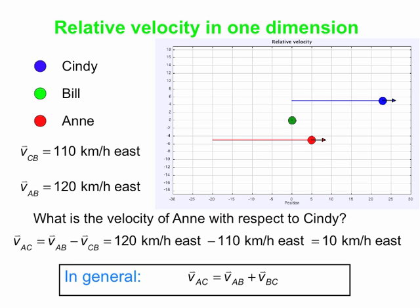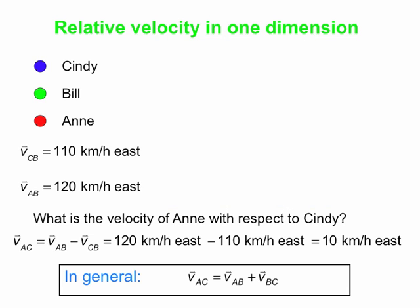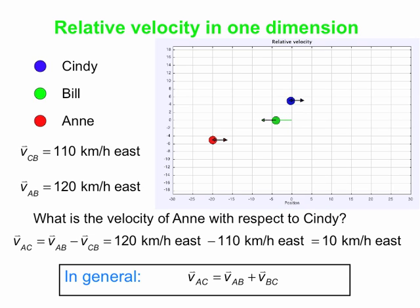Next we're going to switch reference frames. This is Bill's reference frame because he is at rest in it. Now we'll look at somebody else's reference frame. Bill, who we know is at rest in the Earth's reference frame — he's just standing on a bridge — is moving quickly to the left in this next picture.